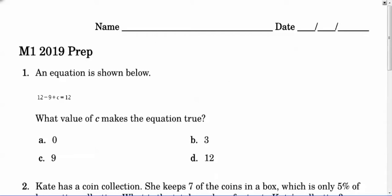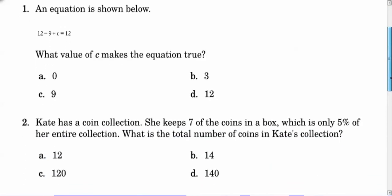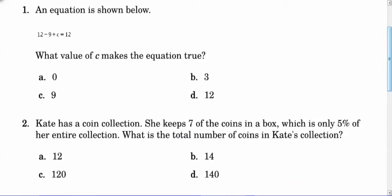An equation is shown below, and it says 12 minus 9 plus C equals 12. This question has a few different skills here. What value of C makes the equation true? The first skill you need to know is how to combine like terms. In this case, they gave you numbers. 12 minus 9 plus C equals 12. So 12 minus 9, we know that's 3. So 3 plus C equals 12.